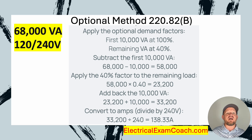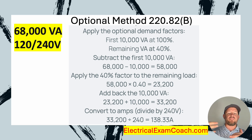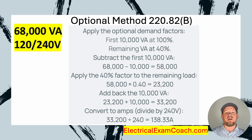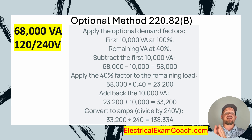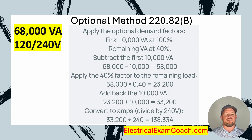We've learned on this channel that when you're in Article 220 — or Article 120 in the 2026 code — you are able to drop the remaining 0.33, and if it's 0.50 or greater you would round up one amp. I do want to note that this calculation does not work for the 2026 NEC — they've changed these numbers — but everything 2023 and previous, this question is 100% accurate.